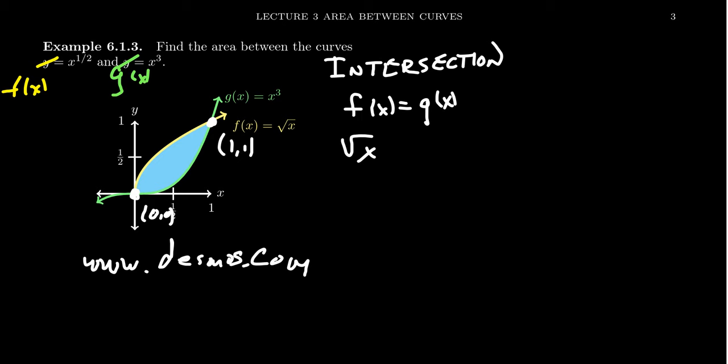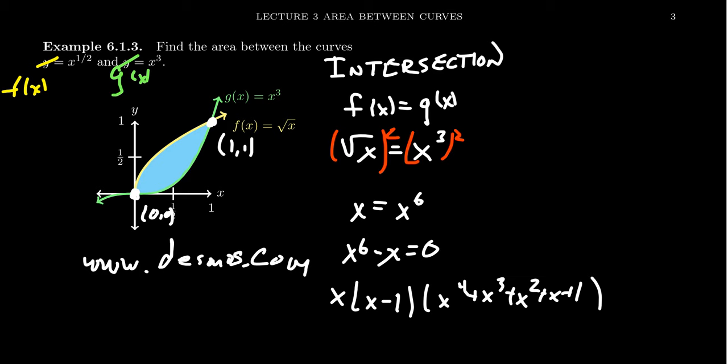Well, f(x), remember, was the square root of x. g(x) was x cubed. In order to make this an easier equation to solve, I prefer to have a polynomial function. So we're going to square both sides. The square root of x squared is an x. x cubed squared, you're actually going to multiply the exponents together, and so we get x to the sixth. And so setting this polynomial equal to zero, we get x to the sixth minus x equals zero. You could try to factor this thing if you want to.